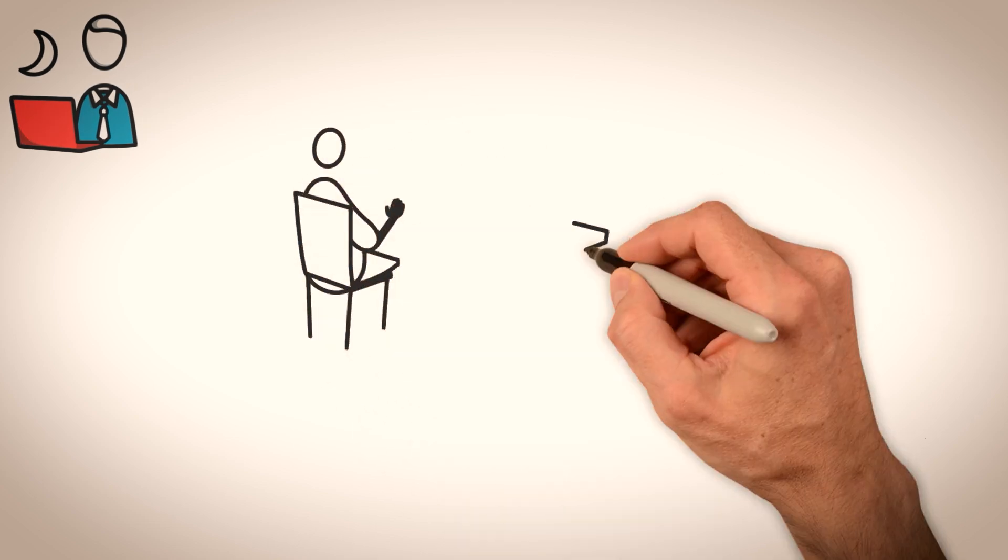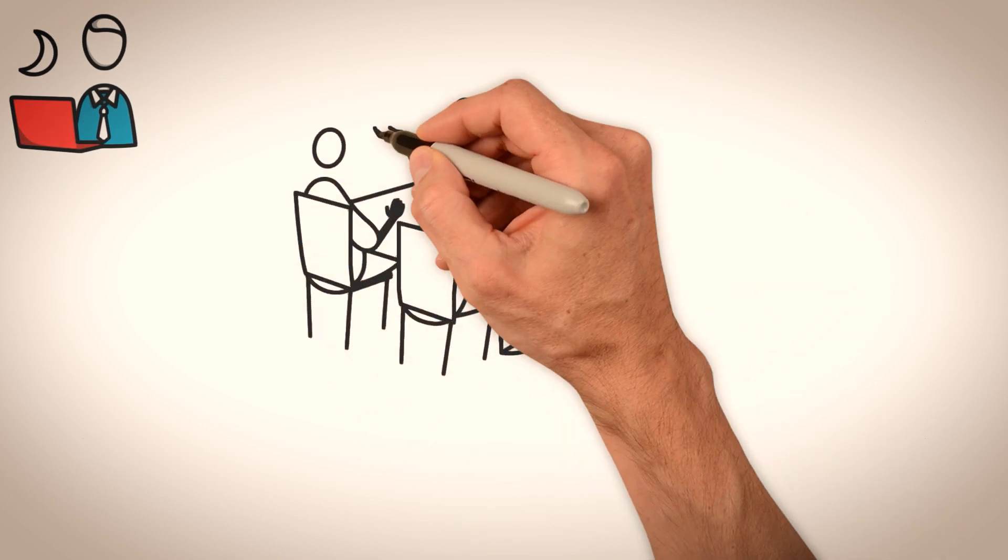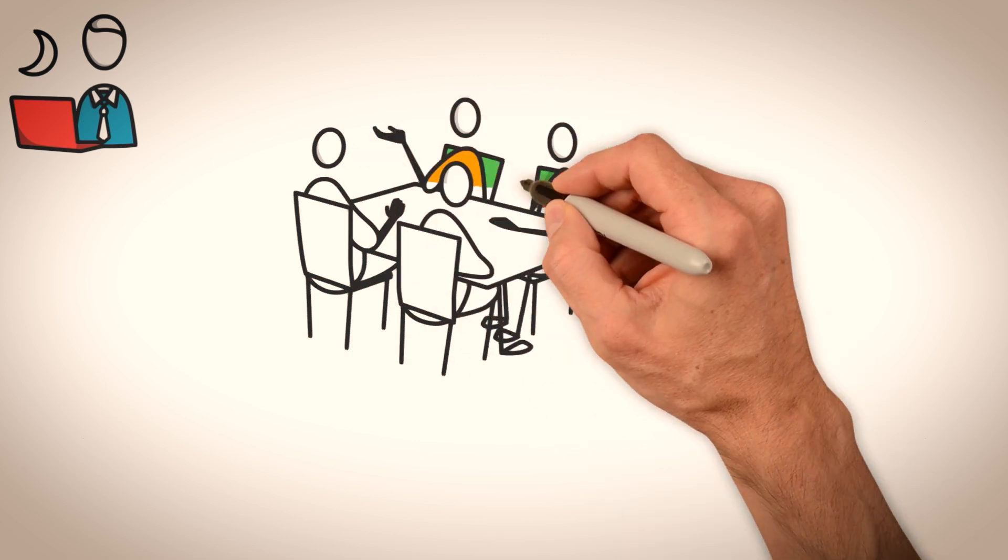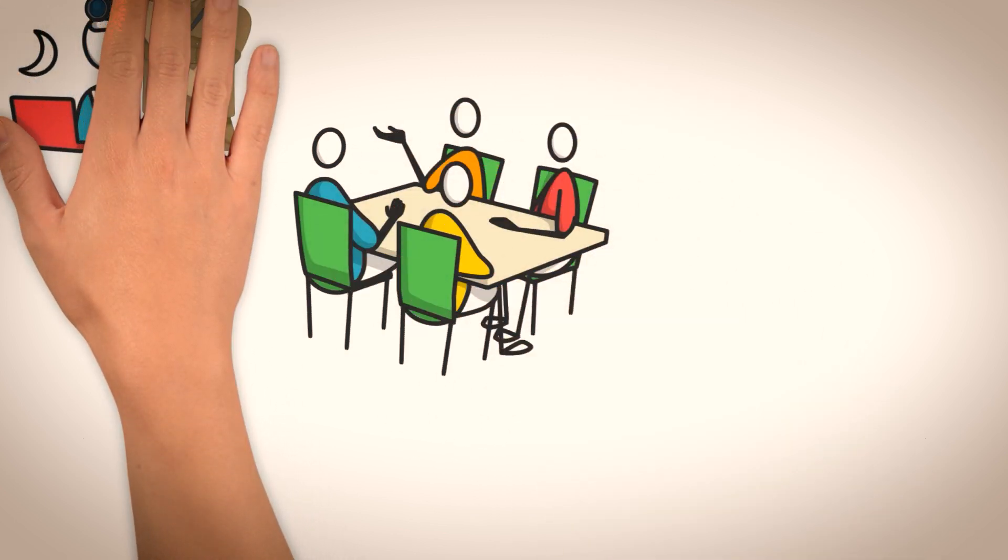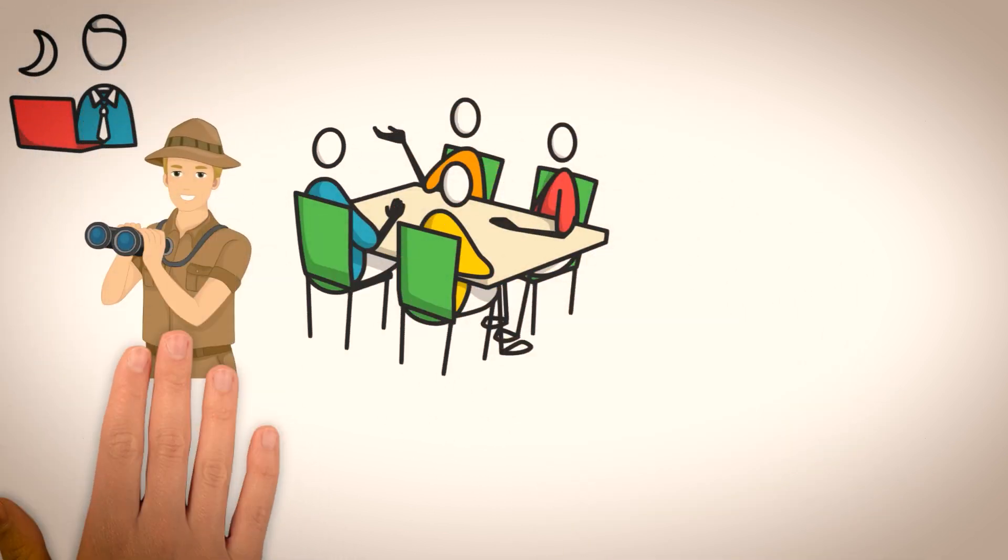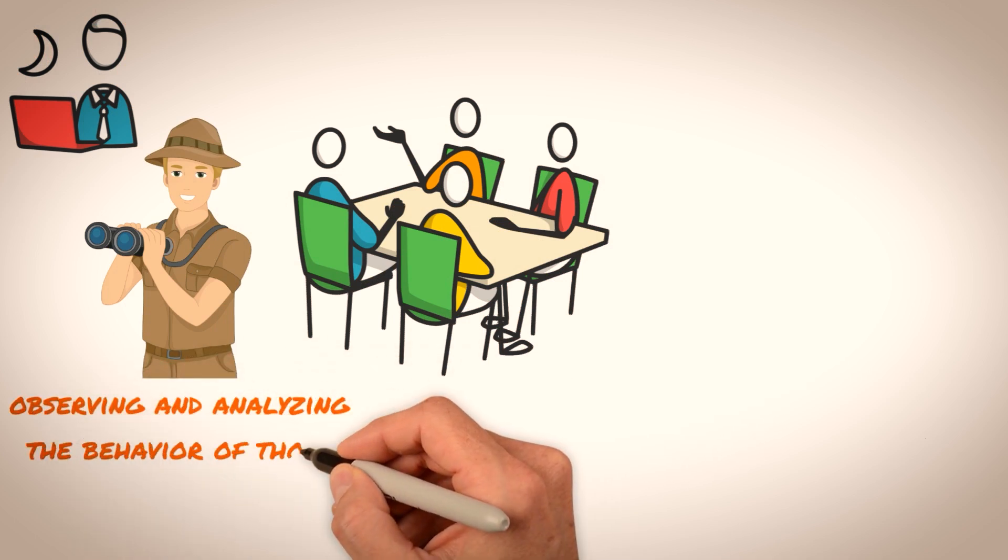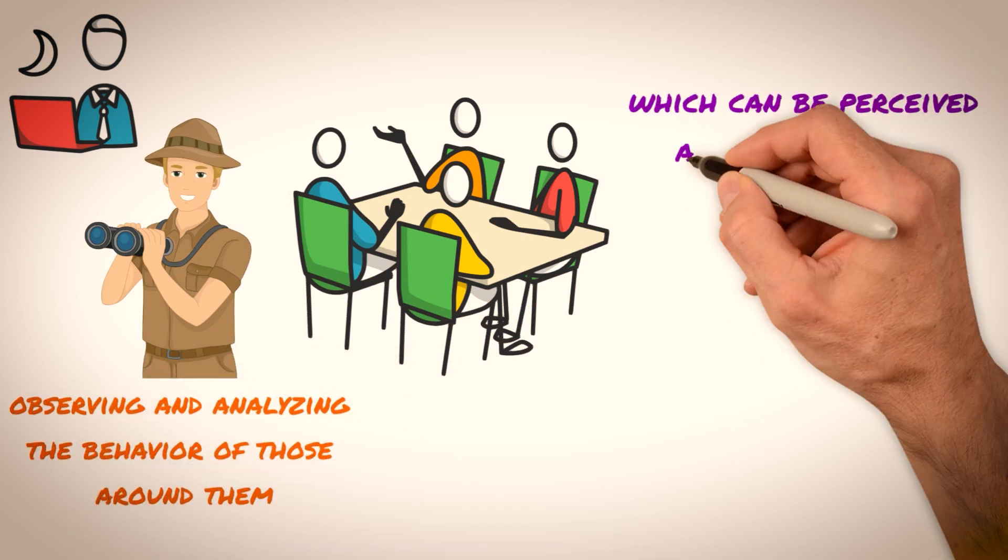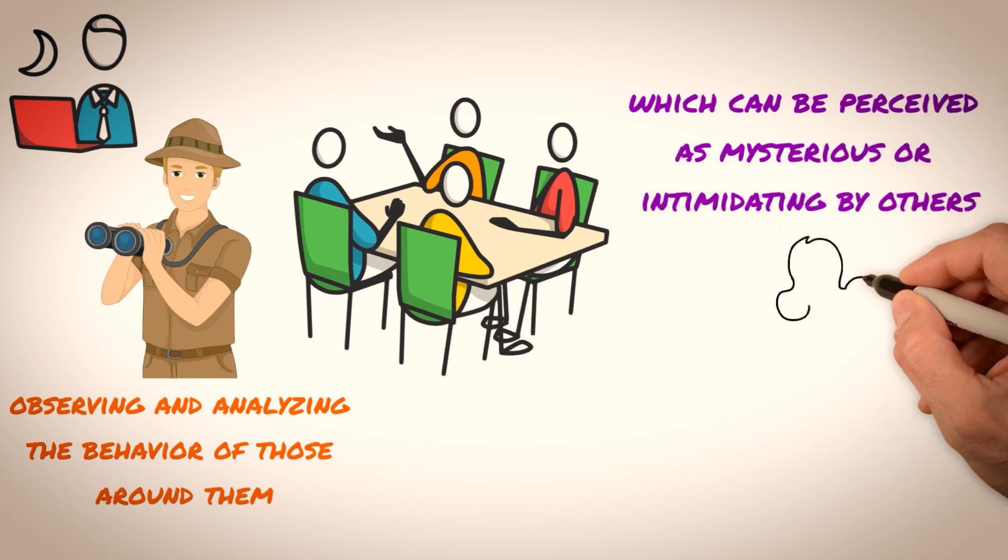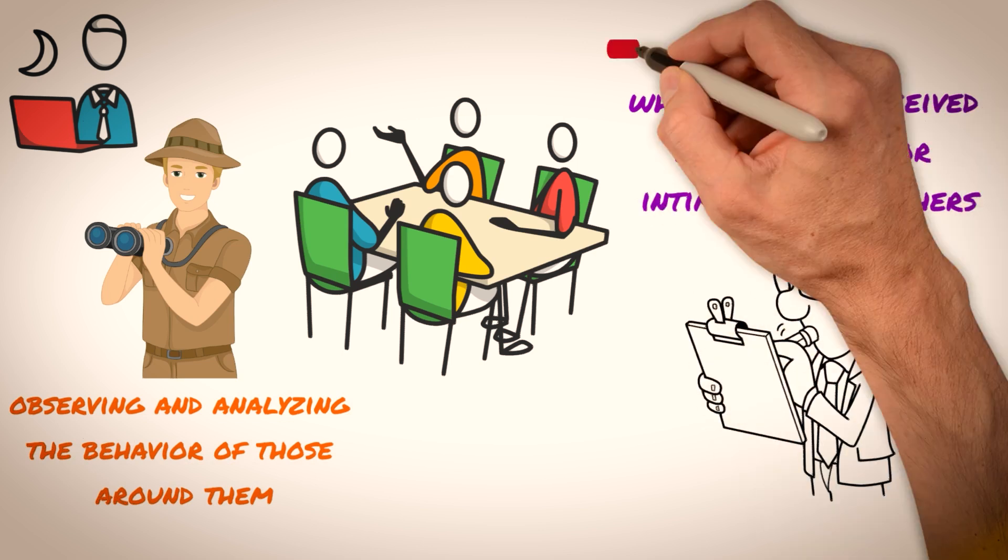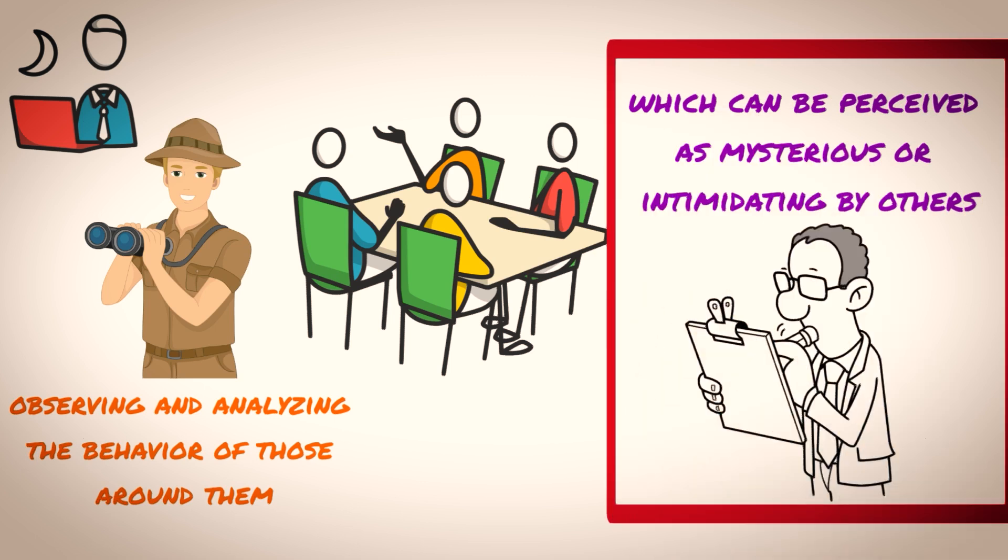Sigma males are not like other alpha males, who dominate social situations by force of personality or by being the center of attention. Instead, they prefer to stay on the periphery of social circles, observing and analyzing the behavior of those around them. This allows them to make calculated decisions based on their observations, which can be perceived as mysterious or intimidating by others.